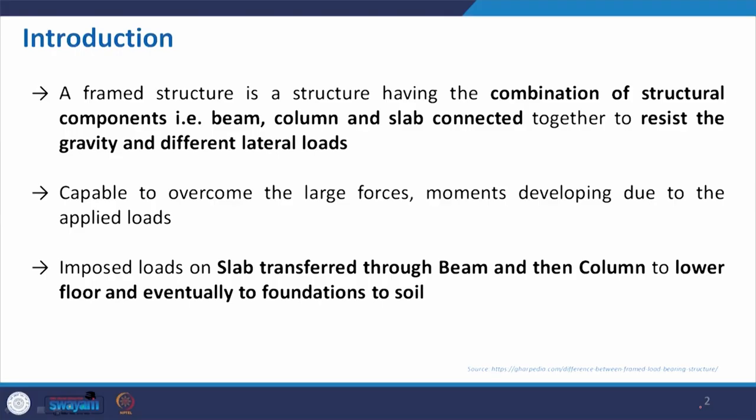Let us start this discussion on frame structure. A frame structure is a structure having a combination of structural components like beam, column and slab connected together to resist against the gravity load, which is basically also referred to as the axial load, acting vertically — transferring from slab to beam, beam to column, and then column to foundation and to soil. Along with that, the joint of beam, column and slab will also protect the building from lateral loads like wind loads that we discussed earlier.